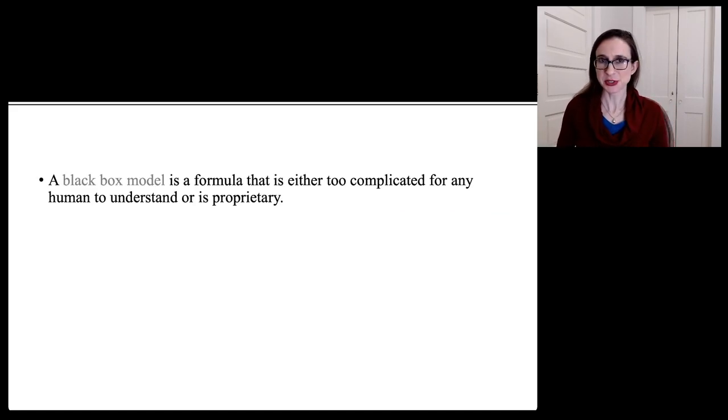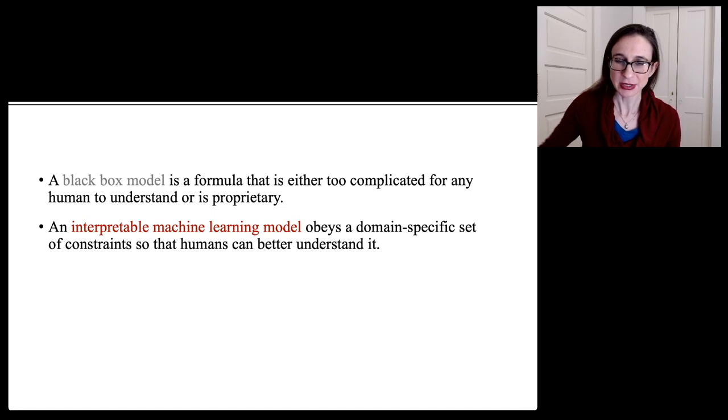Now a black box machine learning model is a formula that's either too complicated for any human to understand or it's proprietary, which means that it's some company's secret sauce and we have no idea how complicated the model actually is. Whereas an interpretable machine learning model obeys a domain specific set of constraints so that humans can better understand it. So these are models that are constrained. They're constrained optimization, that's the name of the game.